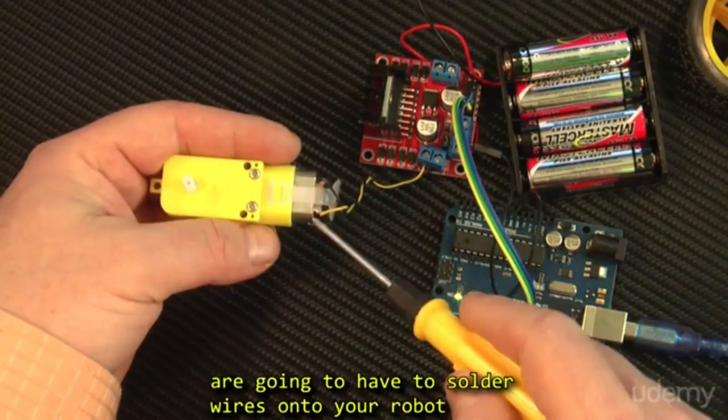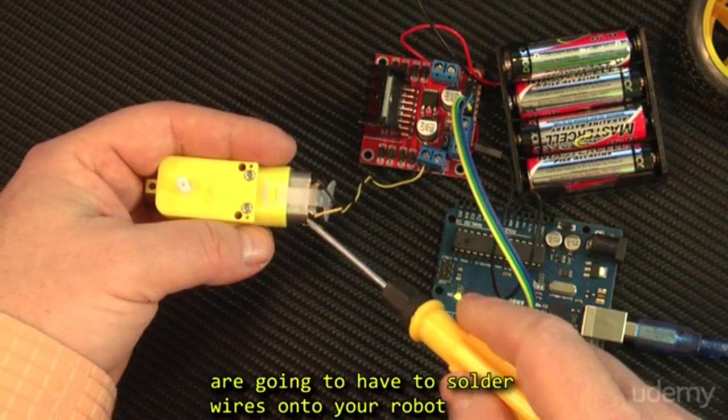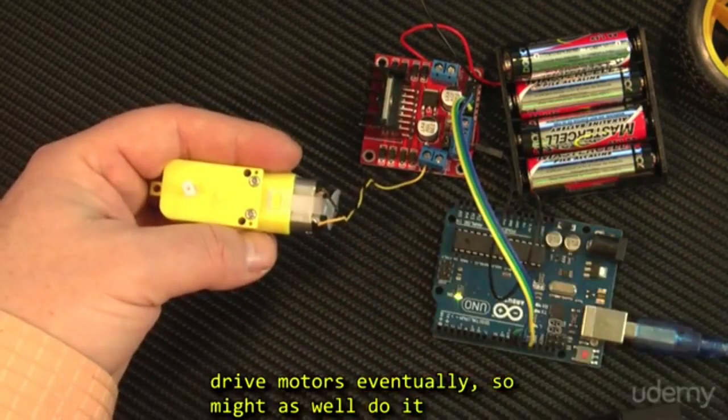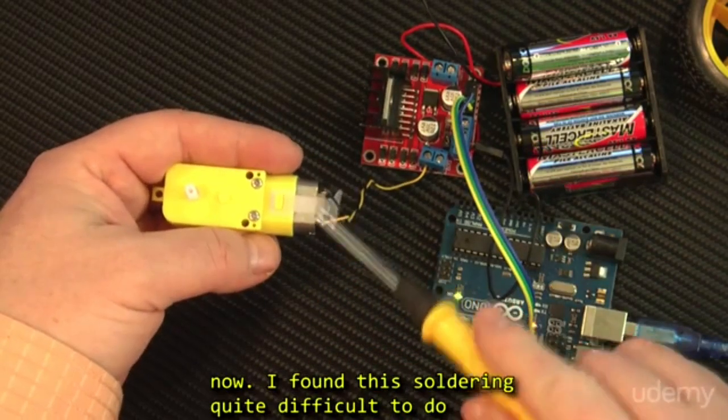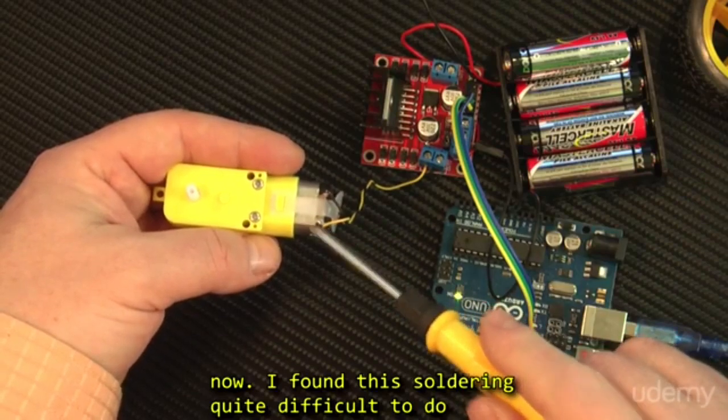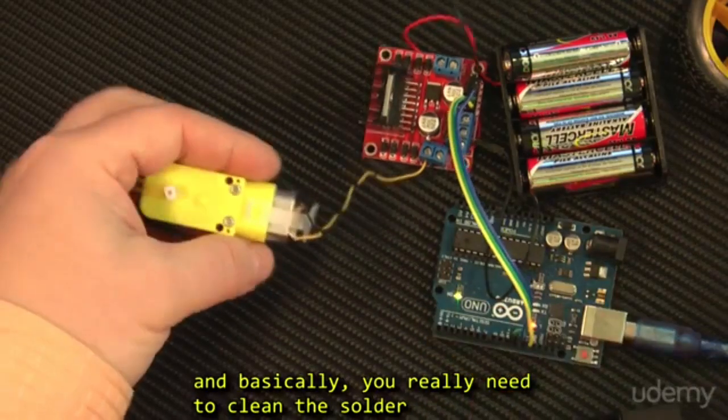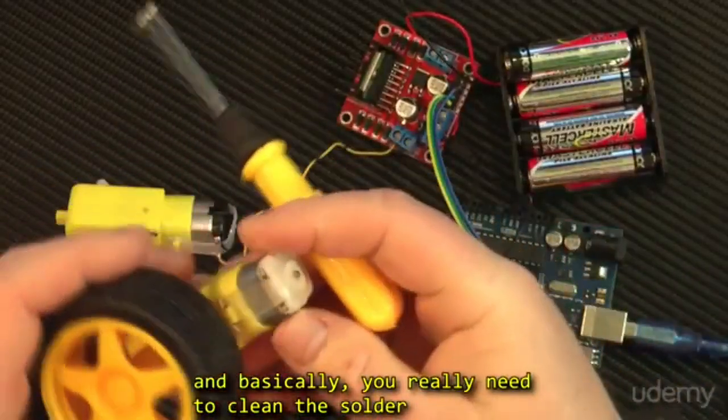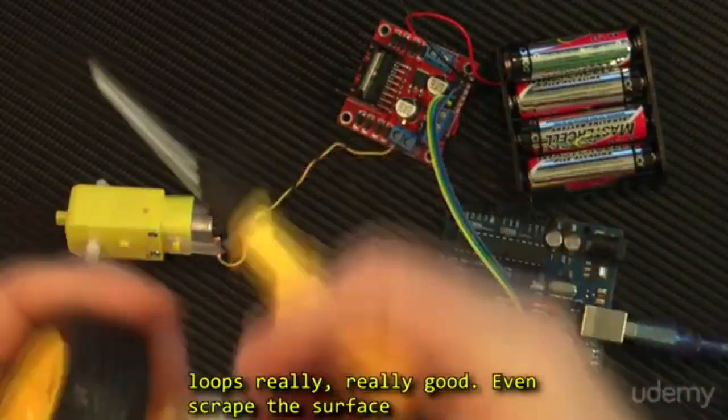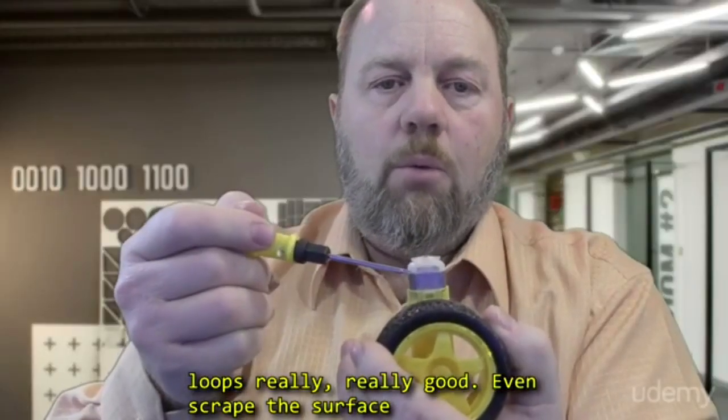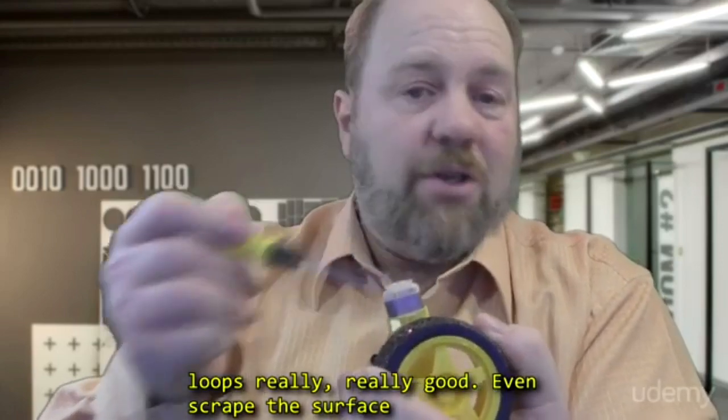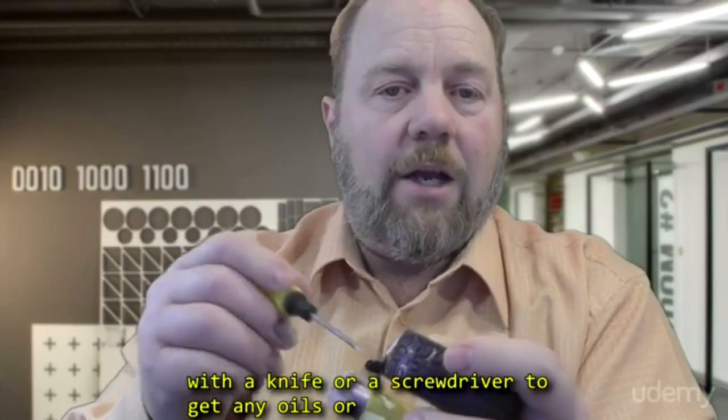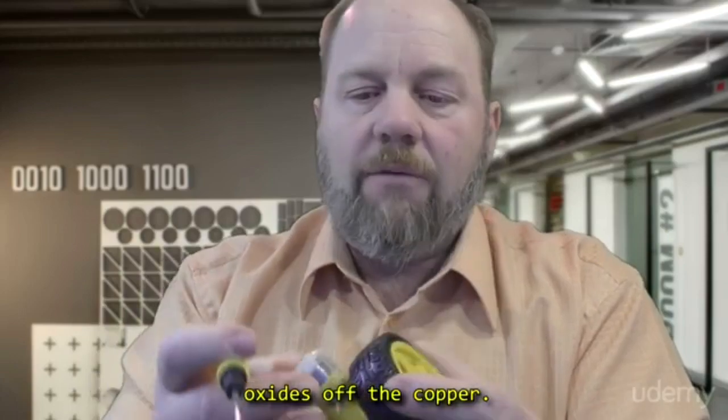However, you are going to have to solder wires onto your robot drive motors eventually, so might as well do it now. I found this quite difficult, this soldering, quite difficult to do, and basically you really need to clean these solder loops. Clean them really, really good. Even scrape the surface with a knife or a screwdriver to get any oils or oxides off of the copper.